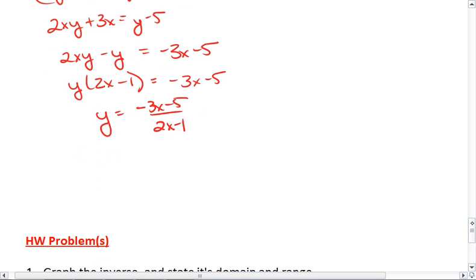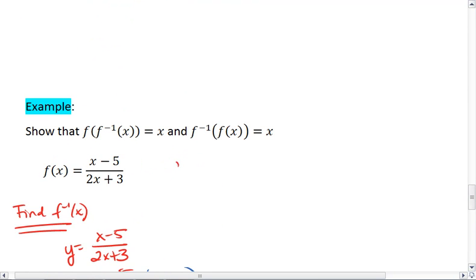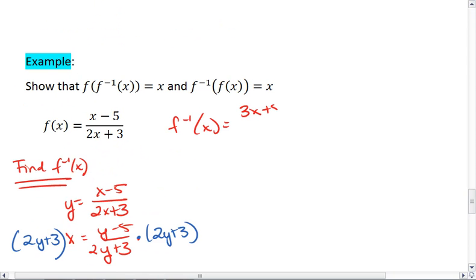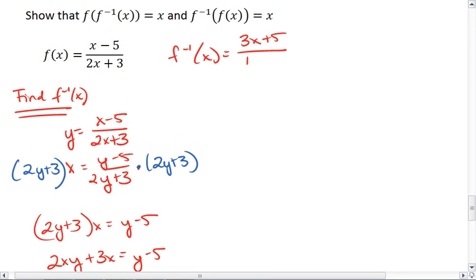I don't like having so many negatives in there, so I'm going to multiply through by negative 1 over negative 1. So f inverse of x is 3x plus 5 over 1 minus 2x.